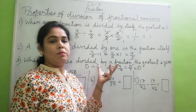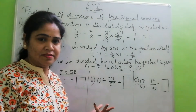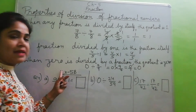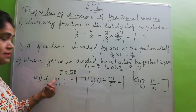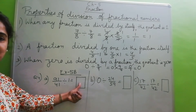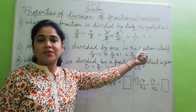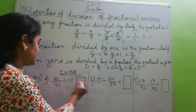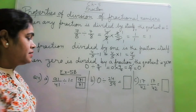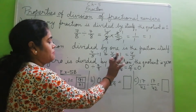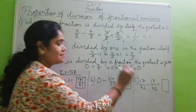By knowing and memorizing these rules, you can solve any question in simplification very quickly. So I am doing exercise 5B, question number 4A. The question is: a fraction divided by 1 — a fraction divided by 1 is the fraction itself, so you will write directly 91 by 41. Next: 0 divided by any fraction is 0, so you directly write the answer 0.